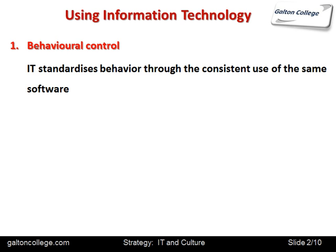IT standardizes behavior through the consistent use of the same software. For example, use of Microsoft Office or Google Office facilities, which are online, are one of the many other Office packages. The use of those packages standardizes the workflow within companies. In a sense, it overlaps with the culture of the business — it forms part of the culture of the business. The language of the business is somewhat tempered or influenced by the language of the software.